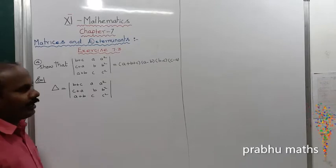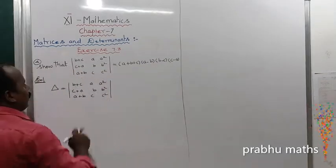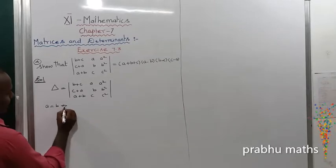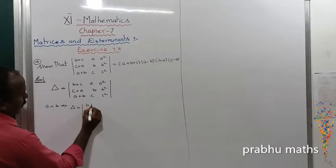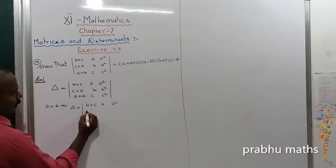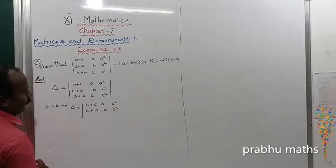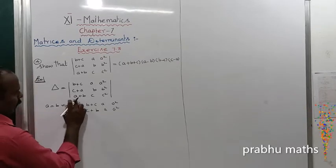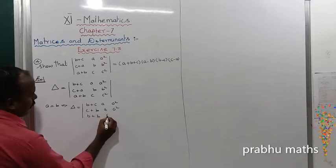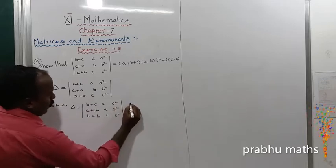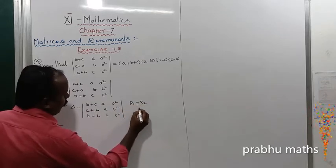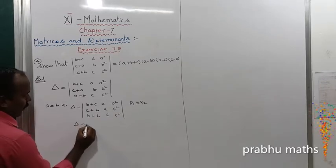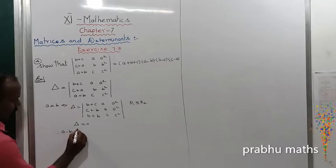The possible factors include (a-b), (b-c), and (c-a). To prove (a-b) is a factor, suppose a equals b. Replacing a with b, we get rows R1 and R2 identically equal. For any determinant, if two rows are equal, the determinant is 0. So delta equals 0, therefore (a-b) is a factor of delta.